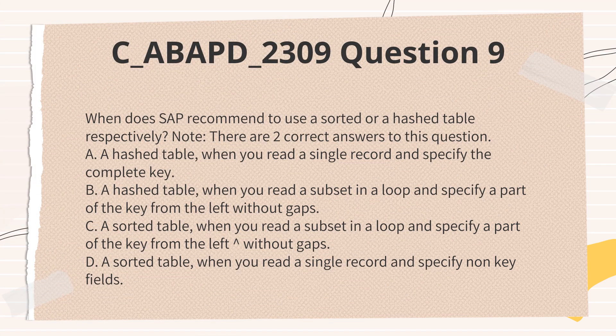When does SAP recommend using a sorted or a hashed table respectively? Note: there are two correct answers to this question. A. A hashed table, when you read a single record and specify the complete key. B. A hashed table, when you read a subset in a loop and specify a part of the key from the left without gaps. D. A sorted table, when you read a single record and specify non-key fields.